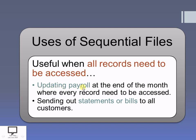Let's take one example: when you want to update the payroll at the end of the month. Any organization that maintains payroll has to go through each and every employee record. So if I want to access all the records of all the employees, the sequential file is very useful. Another example is a service provider who wants to send statements or bills to all customers. Since all customers need to be reached, it is beneficial to use the sequential file where you can access all customers one by one.